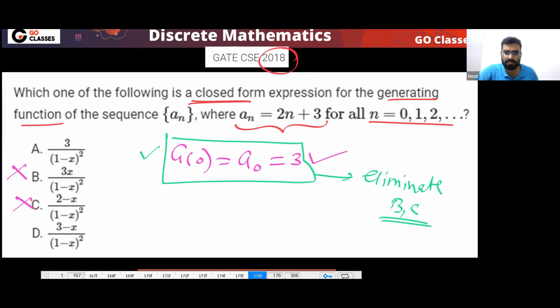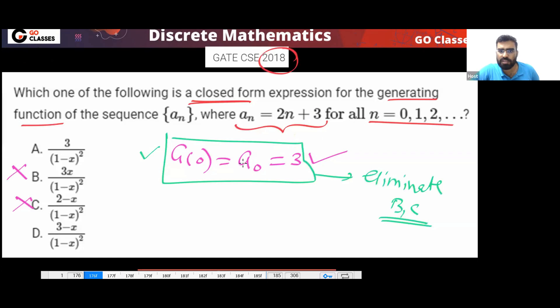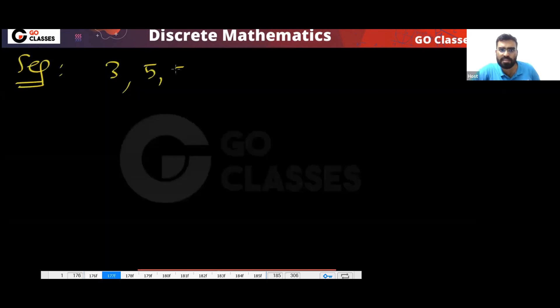Okay, now let's solve this question. This is actually a very easy question. The sequence is given to you. The sequence is 3, 5, 7, 9. This is your sequence. Very simple.